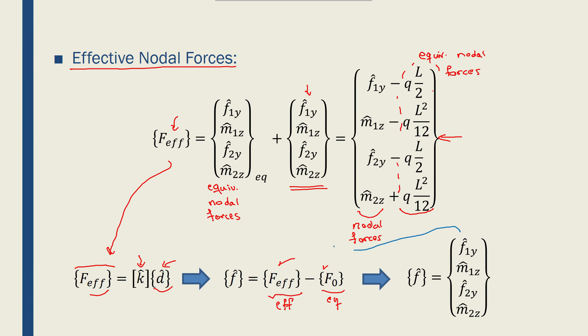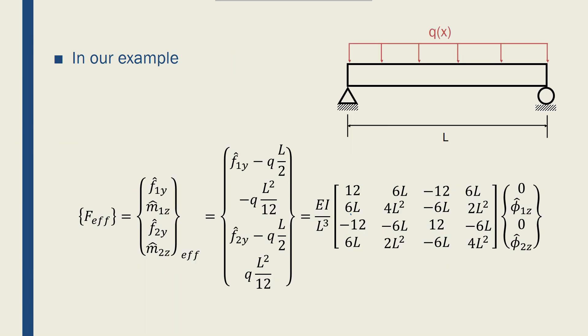This vector is basically that that we want to solve for. So in our example, we have f1y and f2y.